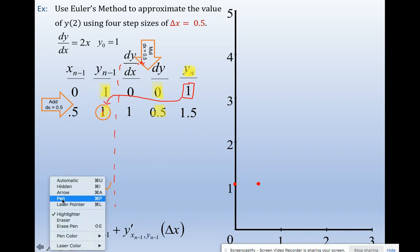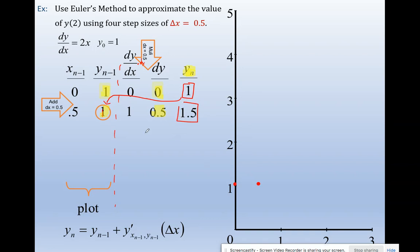Take your new y, add 0.5. Take your new y, put it here, plot your point. Lather rinse and repeat.